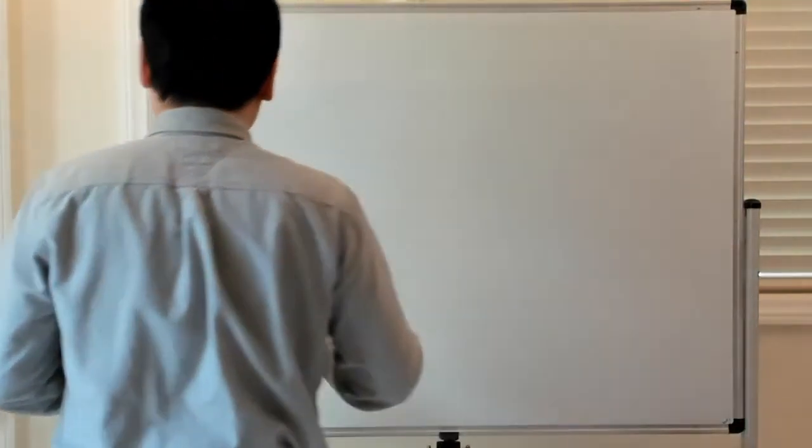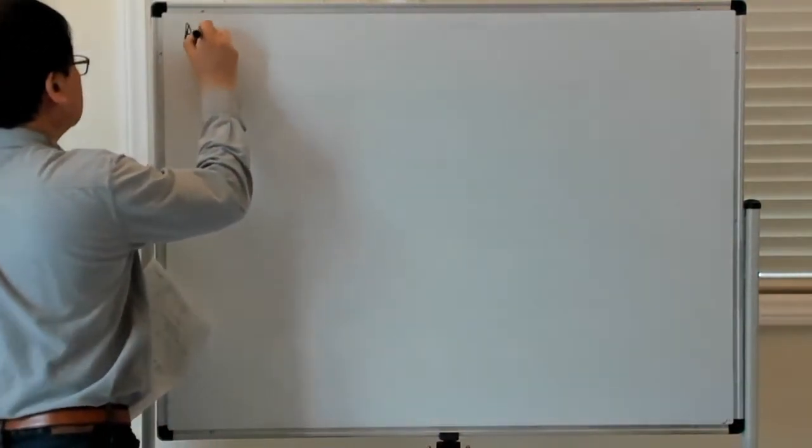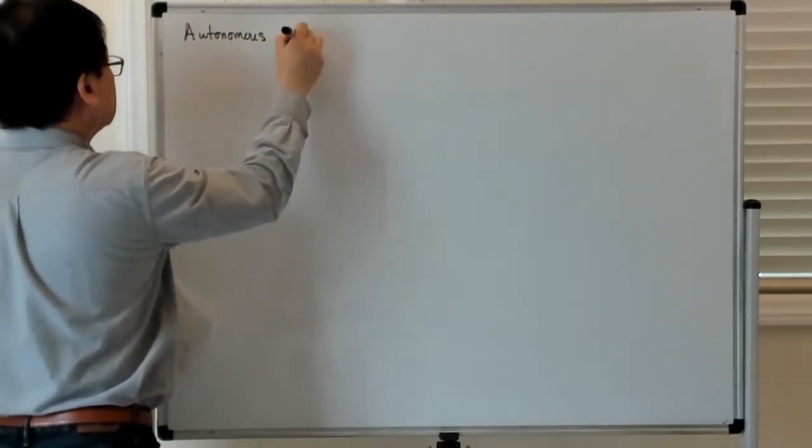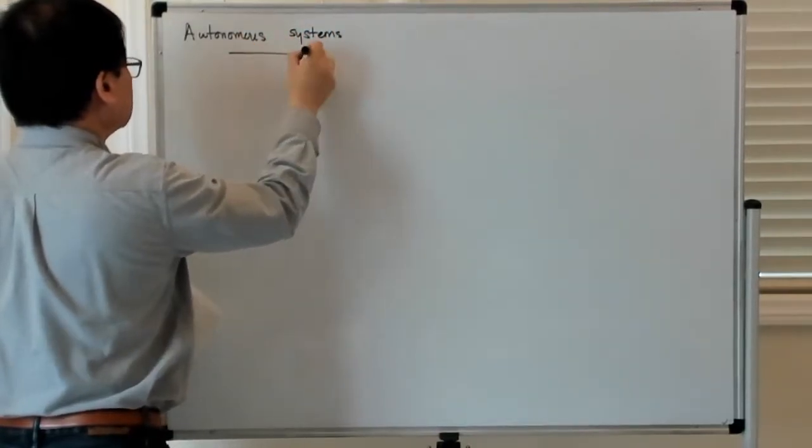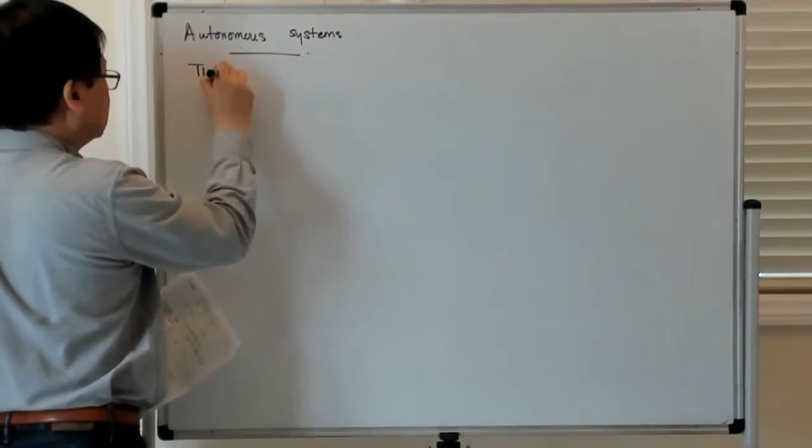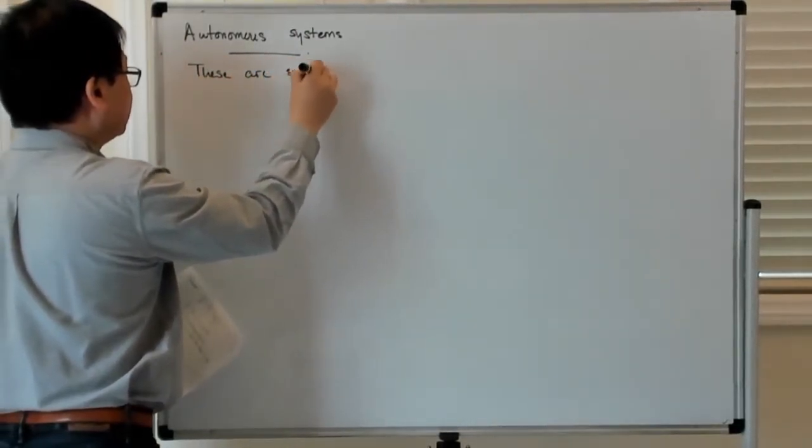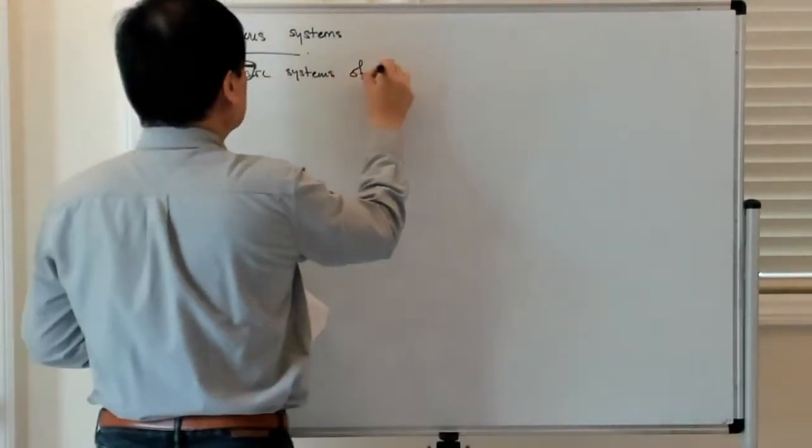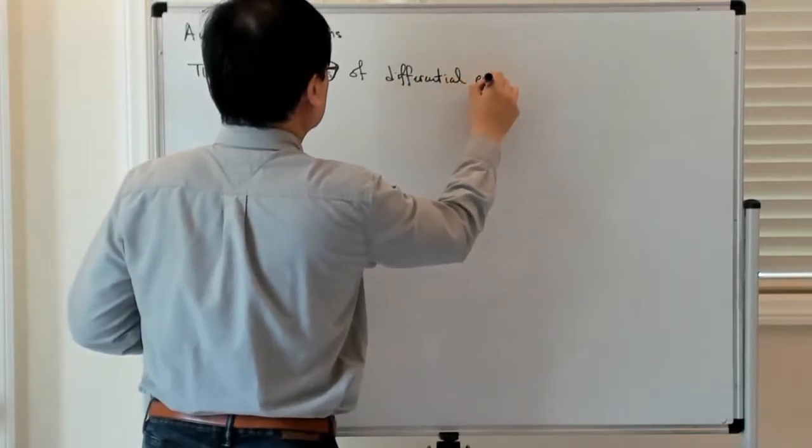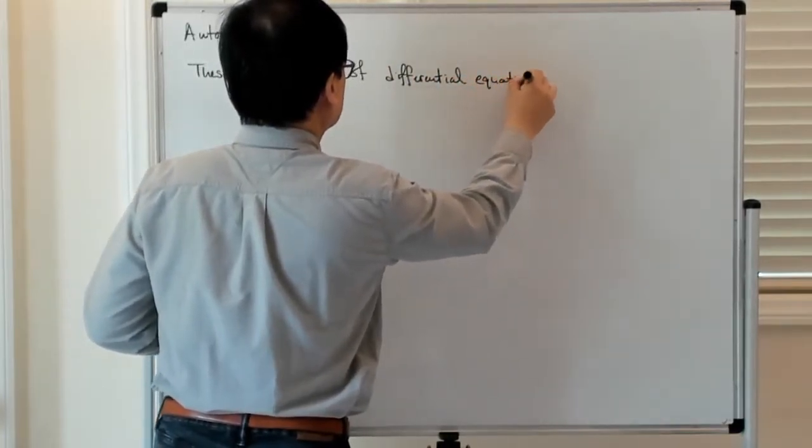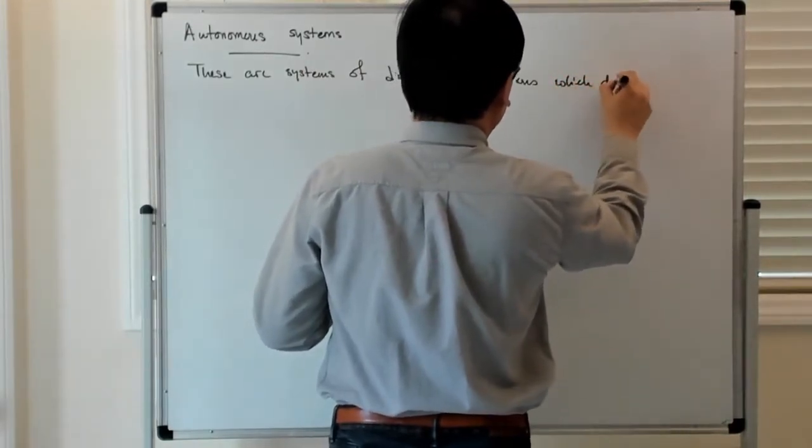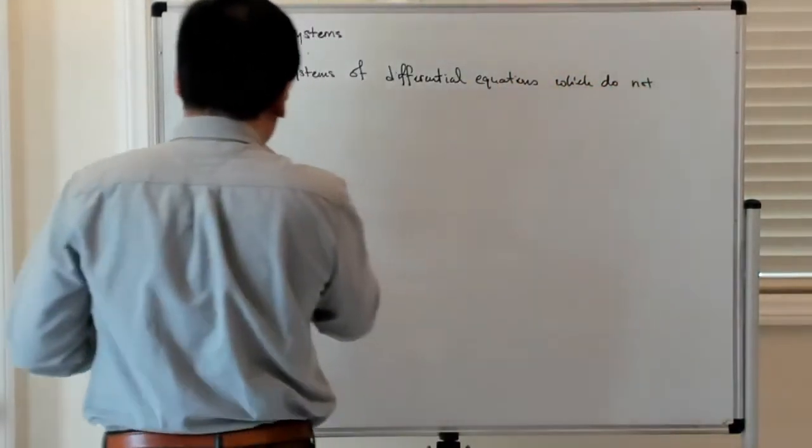All right, so now we're going to talk about autonomous systems. These are systems of differential equations which do not explicitly depend on time.